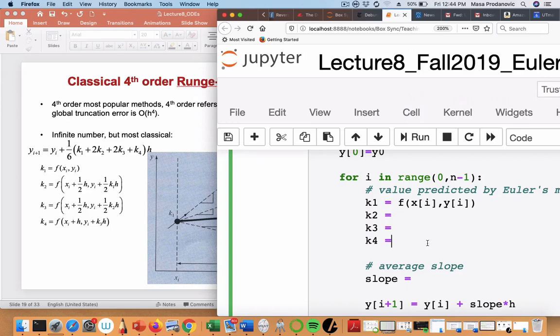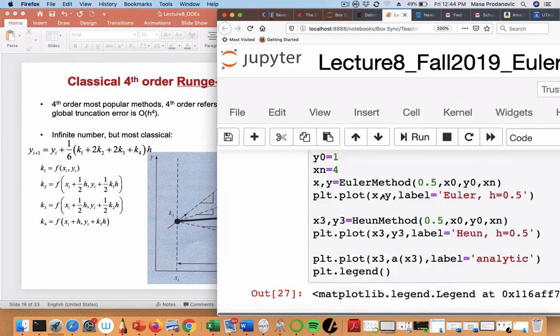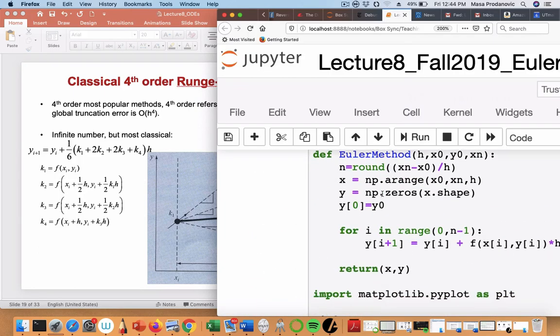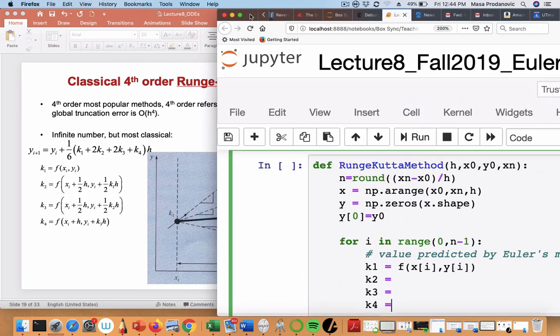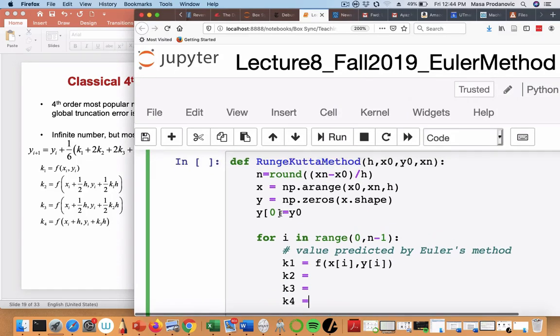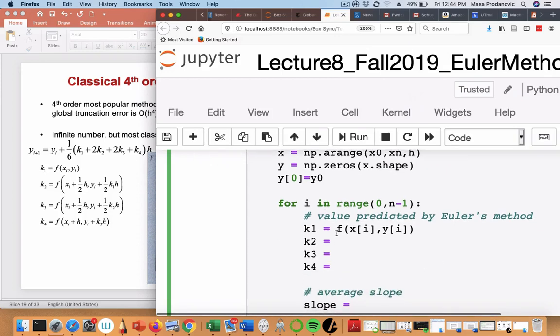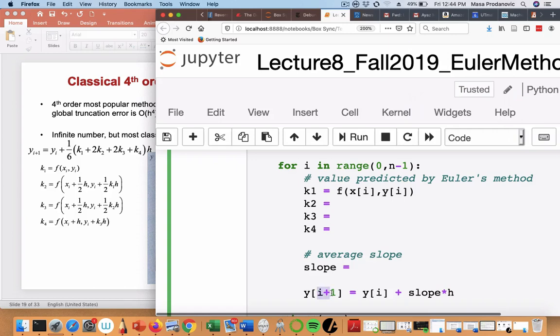Now I geometrically claimed that that's gonna kind of land even for a pretty big h, it's gonna land right on the solution. Now let's check. How about you program and that's gonna be your quiz for today. It's four lines of code. It is four lines of code everybody. You're gonna take this function, copy it over to the next cell and you're gonna call that Runge-Kutta.